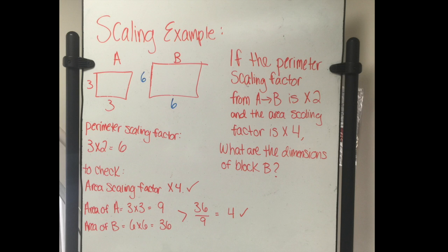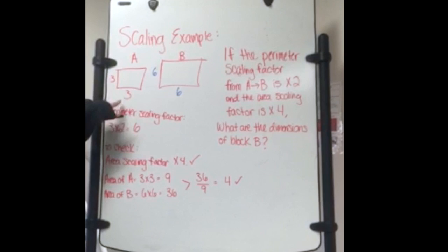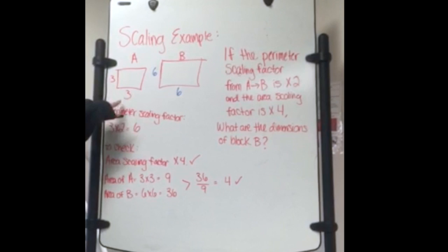So if you had a problem like this and you needed to find the dimensions of block B, you'd multiply 3 times 2, which equals 6. And then to check that, you find the area scaling factor, which will have to be times 4. So the area of A and B is 9 and 36. Then you divide 36 divided by 9, which equals 4.